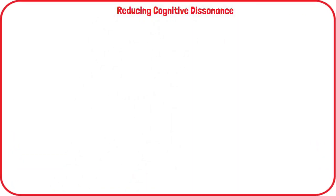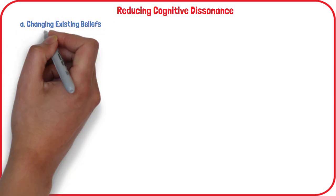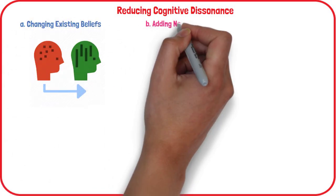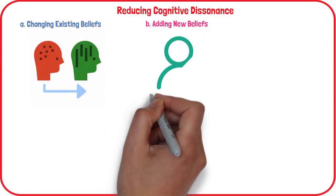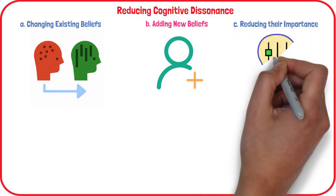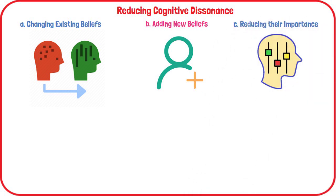Dissonance can be reduced in one of three ways: a. Changing existing beliefs, b. Adding new beliefs, or c. Reducing the importance of the beliefs.